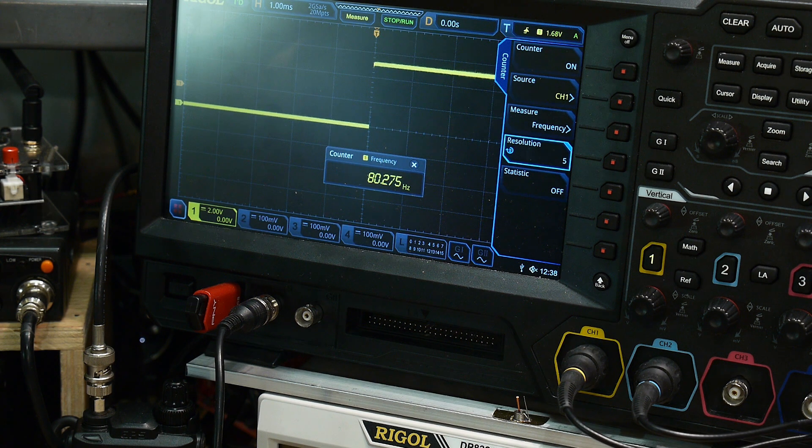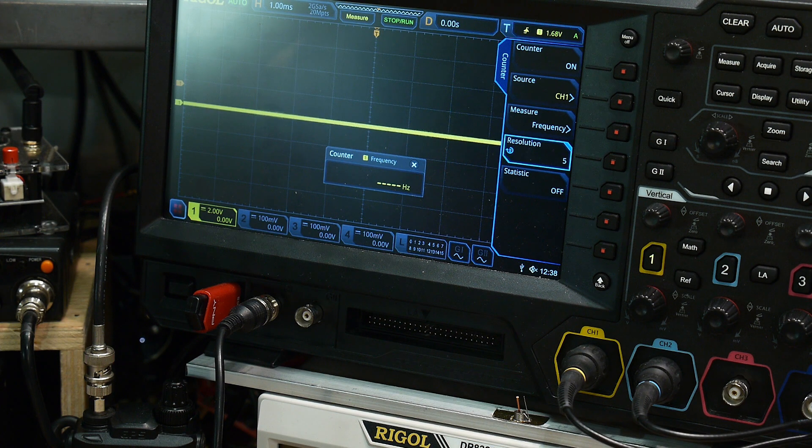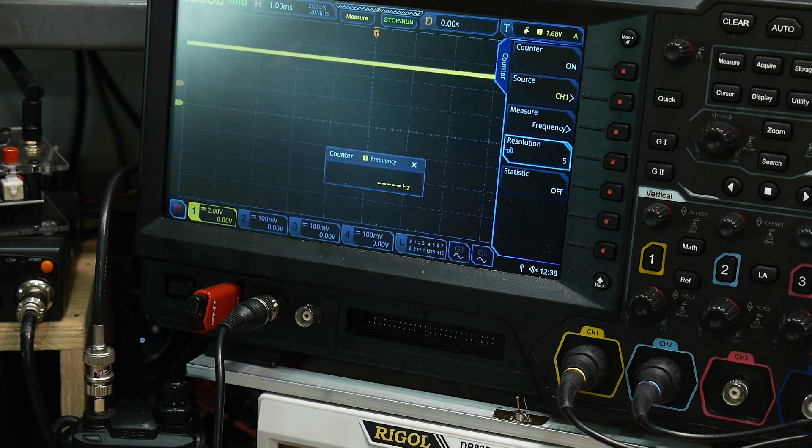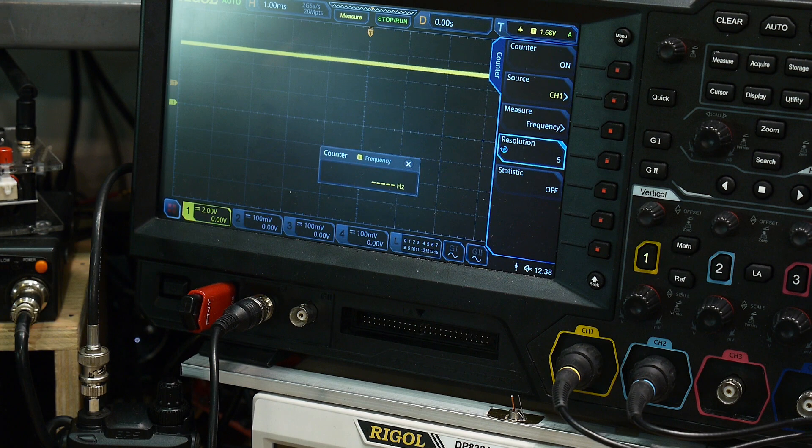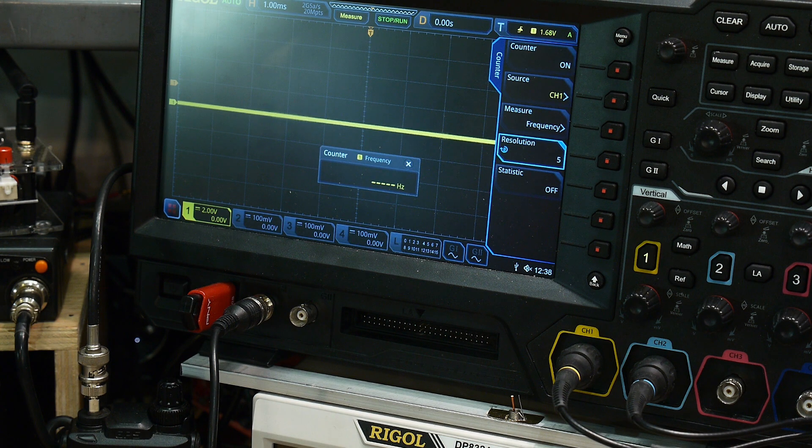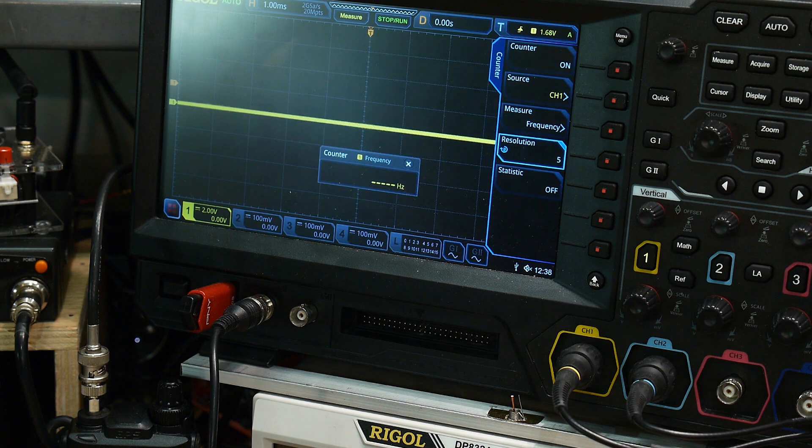What is this one? 80 hertz. It's very slow - up, down, up, down, up, down. I don't think the Rigol likes that slow clock. Let's look at the schematic.